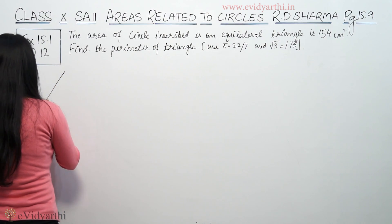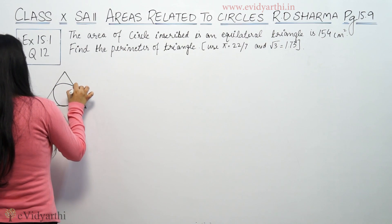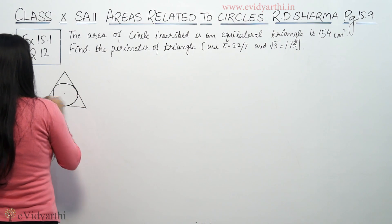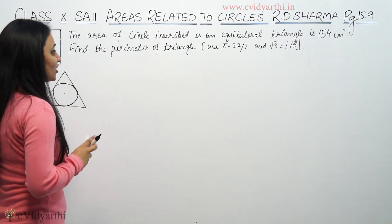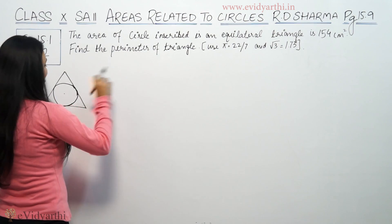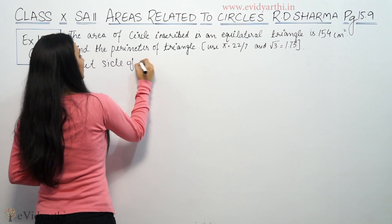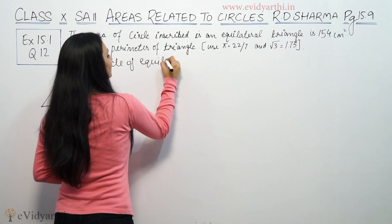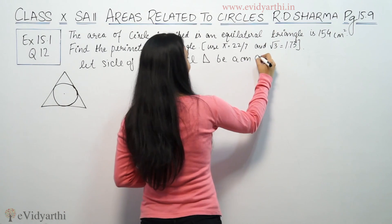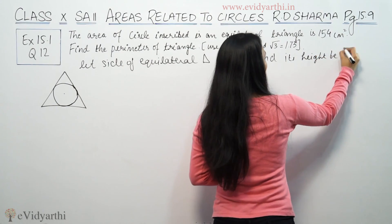So, if we have a triangle which is equilateral, all sides are equal. And there is a circle inside. The triangle's sides we don't know, but the area of the circle is 154 cm². Let's say the side of the equilateral triangle is a centimeter and its height is h centimeters.